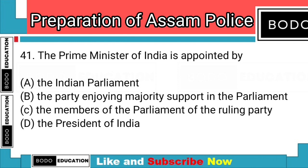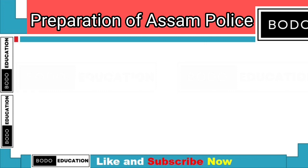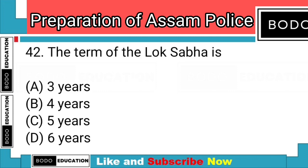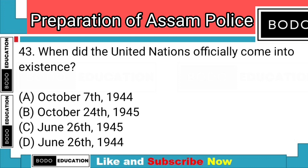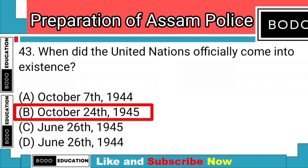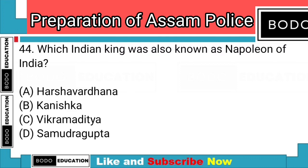Question number 41: The Prime Minister of India is appointed by? Answer: Option D — The President of India. Question number 42: The term of the Lok Sabha is? Answer: Option C — five years. Question number 43: When did the United Nations officially come into existence? Answer: Option B — October 24, 1945.